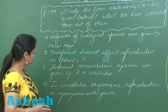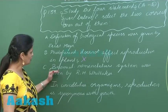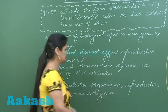affects reproductive activities of plants as well as animals. Statement C: Binomial nomenclature was given by Linnaeus, not Whittaker. This is again